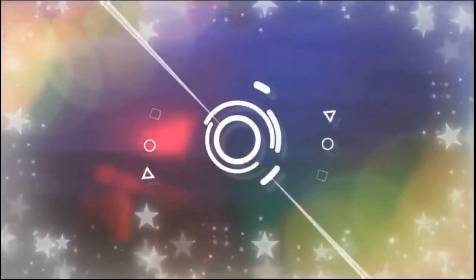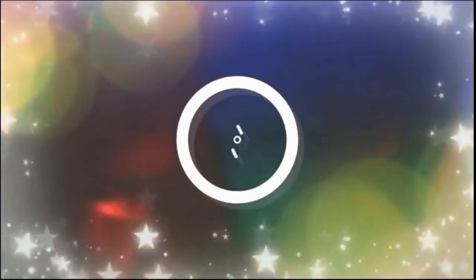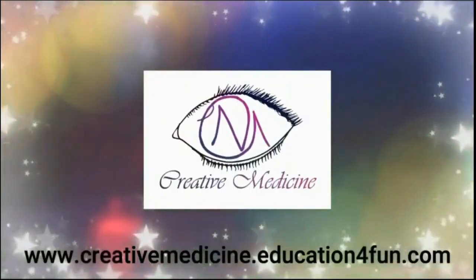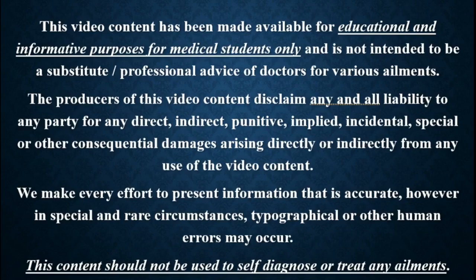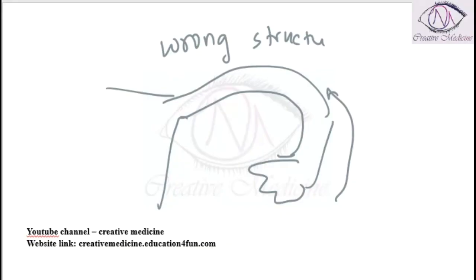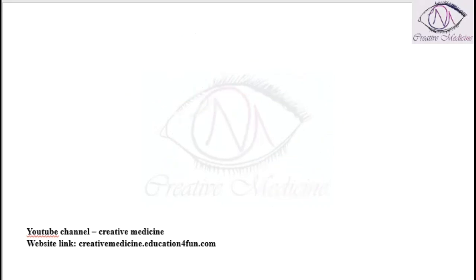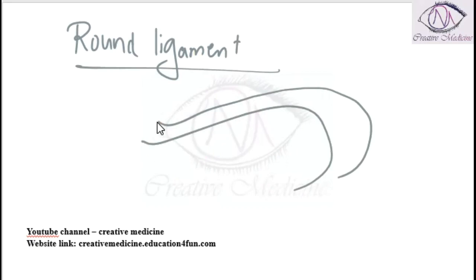Hello friends, welcome to Creative Medicine. In this lecture, we will learn about the round ligament attachment. The round ligament arises from the corner of the uterus. It traverses through the anterior abdominal wall to the deep inguinal ring, to the superficial inguinal ring.